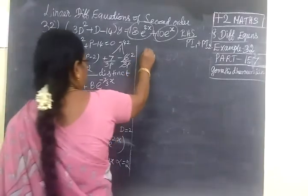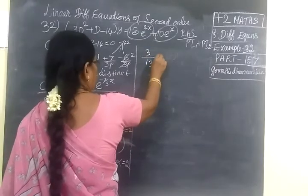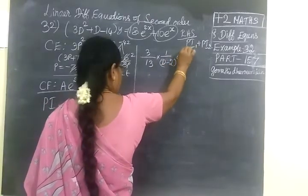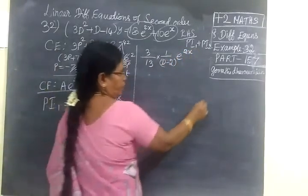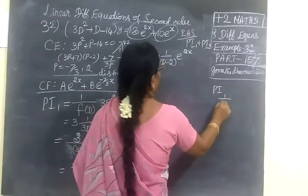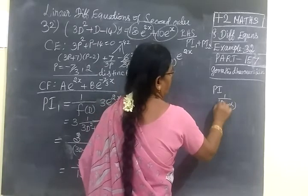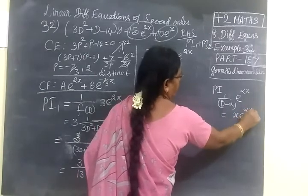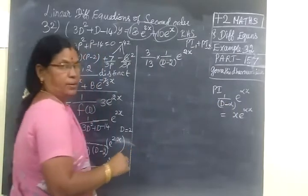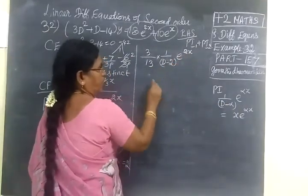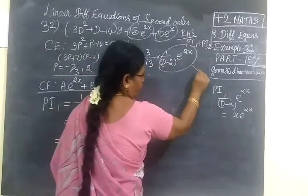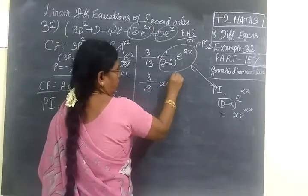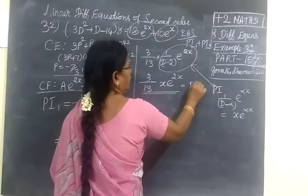So 3/13 times 1/(d minus 2) times e^(2s). We know the particular integral formula: 1/(d minus alpha) times e^(alpha·s) equals x·e^(alpha·s). This is plus 2, this is minus 2. So in the formula you can write it as 3/13 times x·e^(2s). This is PI1.